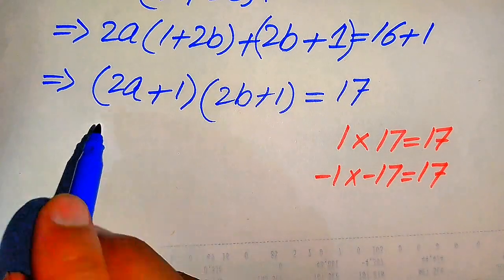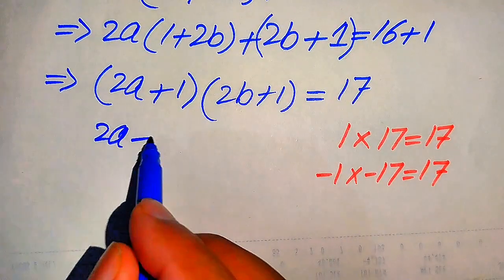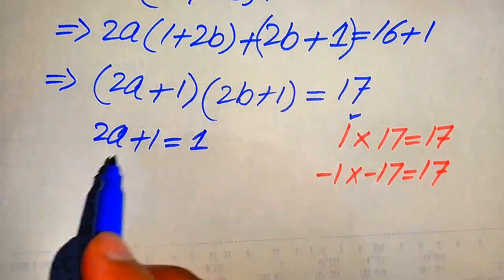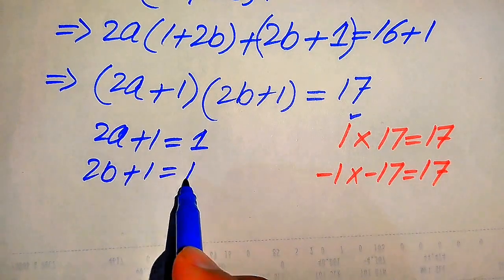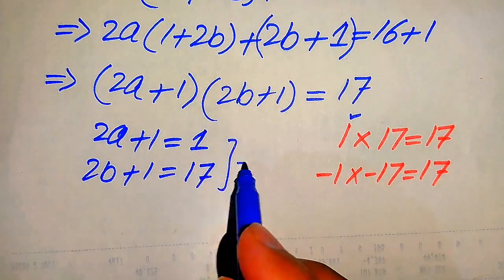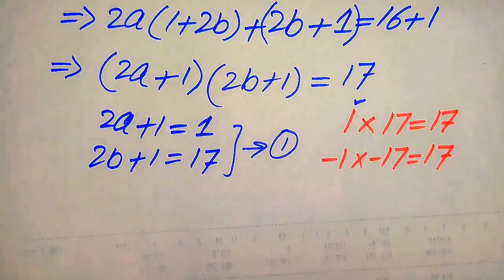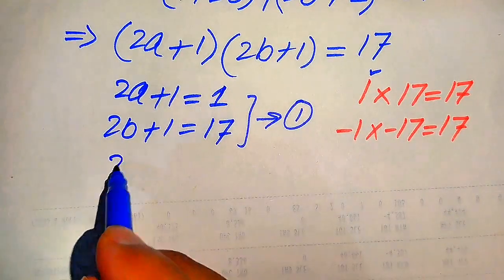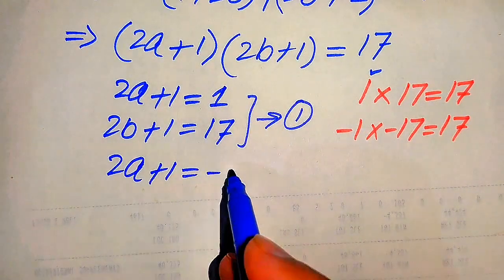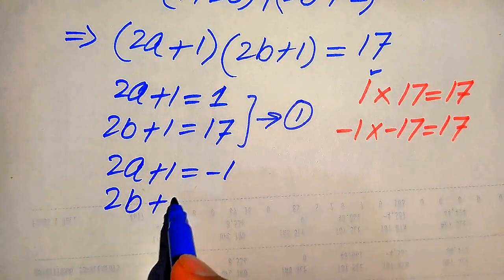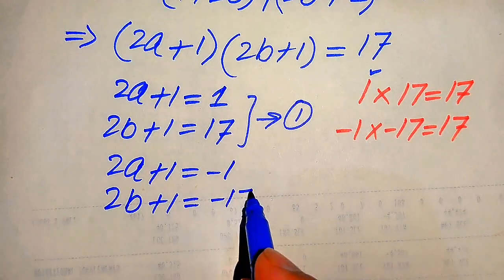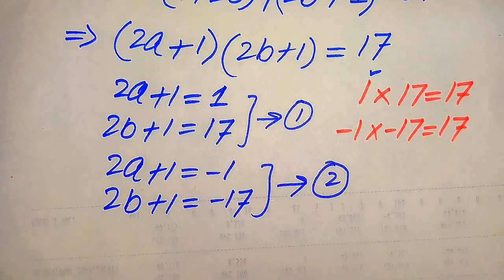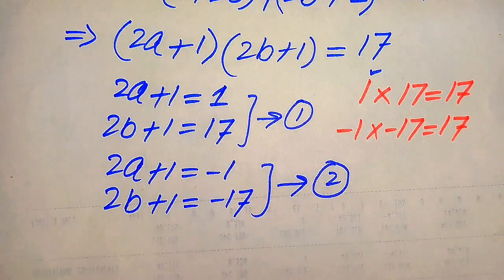In Case 1, we compare: 2a plus 1 equals 1 and 2b plus 1 equals 17. In Case 2, we compare: 2a plus 1 equals minus 1 and 2b plus 1 equals minus 17. We now solve these two cases to get the values of a and b.